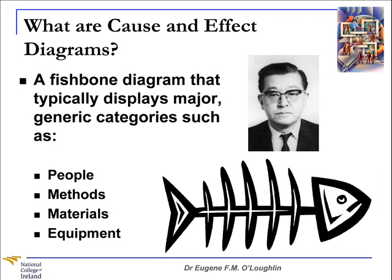What is a cause and effect diagram? It's generally regarded as a fishbone diagram that typically displays major generic categories such as people, methods, materials and equipment that cause an effect that's often perceived as a problem. It was first applied by Kaoru Ishikawa in 1950, and it can be used to systematically analyse cause and effect relationships and to identify potential root causes of a problem. It's a good idea to use a diagram like this to display in increasing detail all of the possible causes related to a problem.